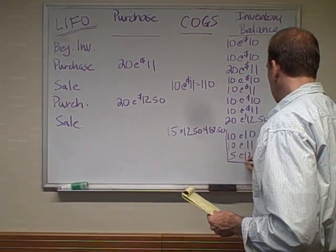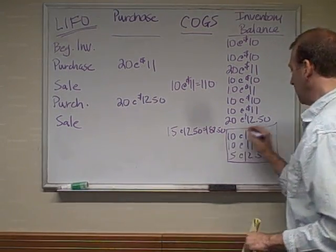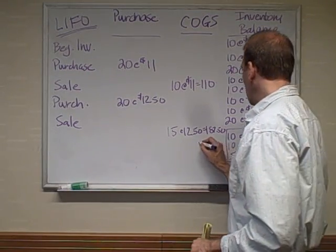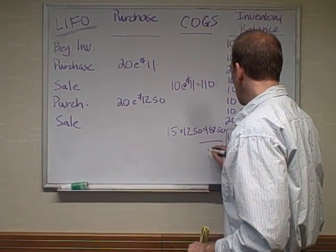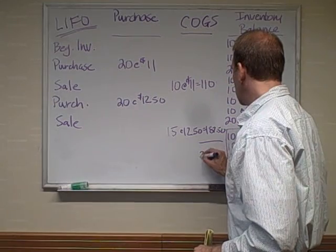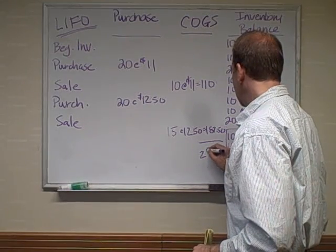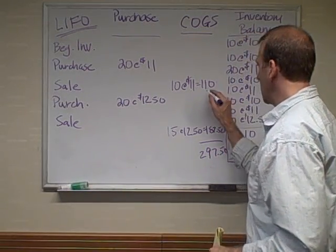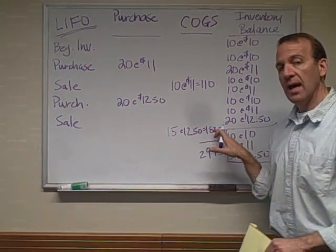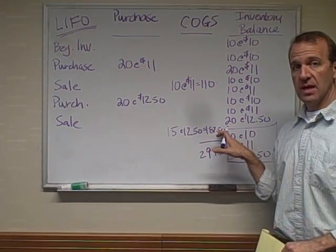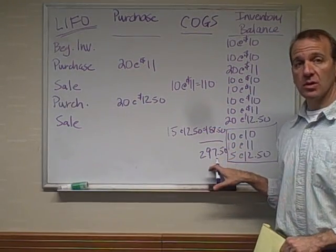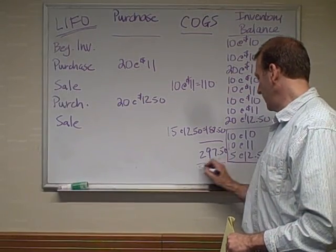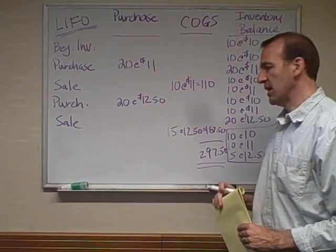This here is our ending inventory — we can multiply these all out and add them up. Our total cost of goods sold would be $297.50, because we have $110 of cost of goods sold and $187.50 of cost of goods sold, giving us a total cost of goods sold of $297.50.